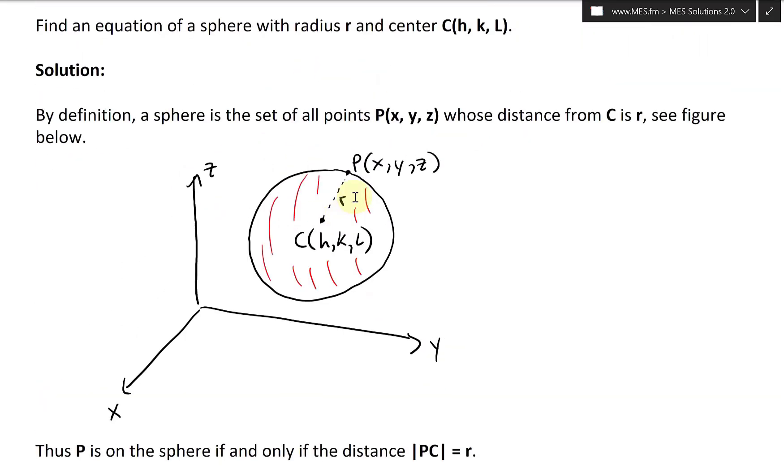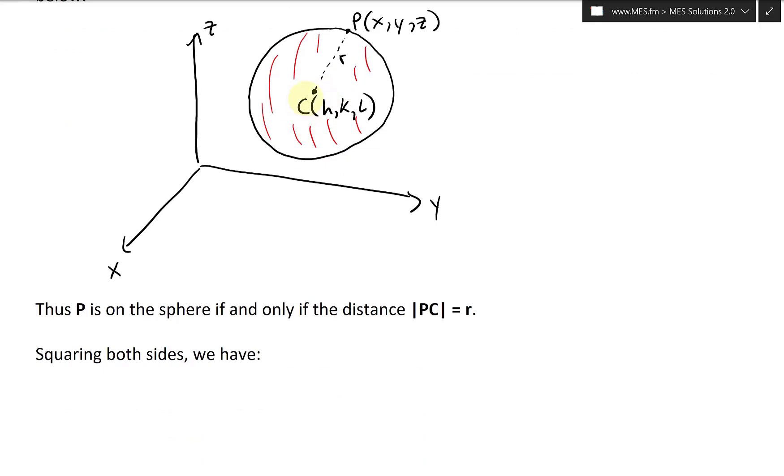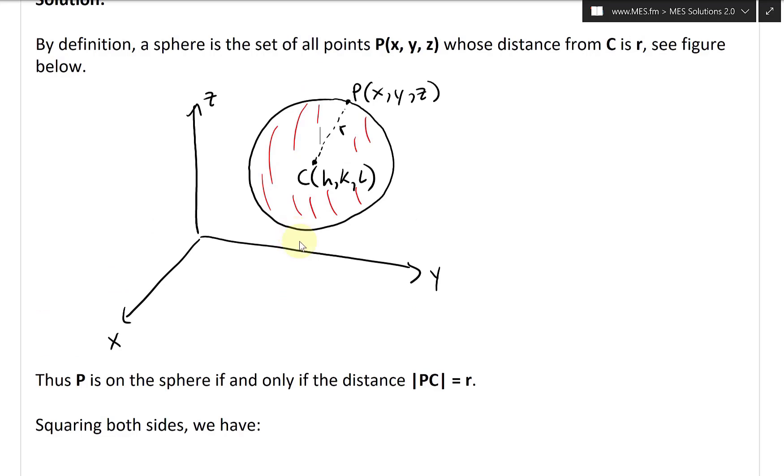Alright, so we have this sphere, and the distance from C is always going to equal R. And here I just move this over just to make it more in the center of the sphere. So thus P is on the sphere if and only if the distance PC equals R.